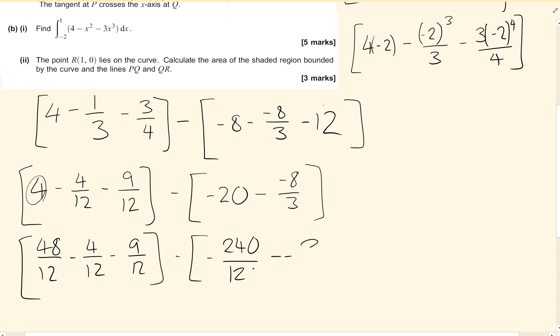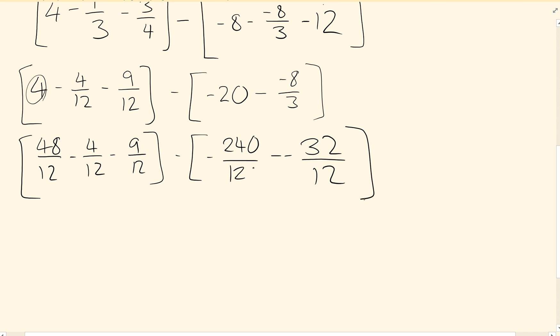Putting this all together, I've got 48 minus 13, which is 35 twelfths on this side. Minus 240 plus 32, which is 208 twelfths. That's minus 28 twelfths. So I'm adding those two things together, so I'm going to get 243 twelfths as my final solution for the area under the curve.